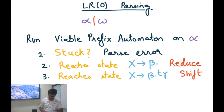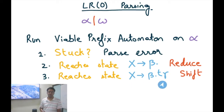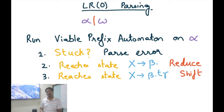Similarly, if after running the automaton on alpha we reach a state like X→β•tγ, where t is a terminal followed by some string gamma, then we should shift by consuming the next token, which we hope is t. If we have a lookahead, we can also check whether the next token is indeed t and only then shift.